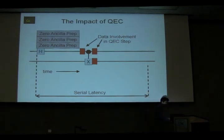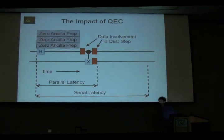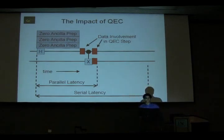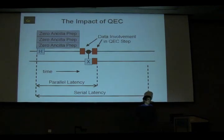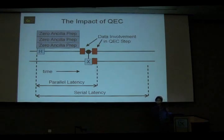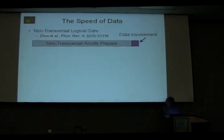However, those zero ancilla pairs, besides being identical, are also truly independent of the data. They can be taken off to the side and done a bit in advance. So now what we get is as soon as the first one's done, we can perform the data-involved portion of the first QEC step, the logical CNOT, and then immediately only the data-involved portions of the other QEC steps, giving us a much shorter overall latency.